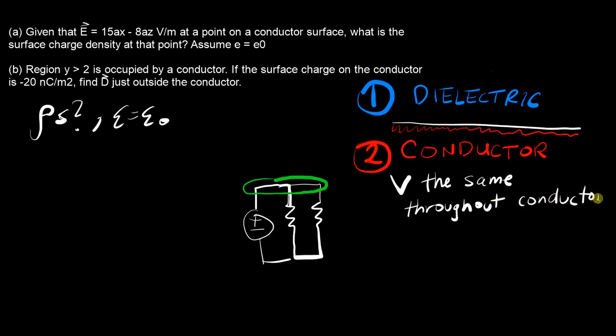And because V is the same, if you were to try and take the gradient of something that's a constant, that would be zero. The gradient of a constant would be zero, and because the electric field would be zero...